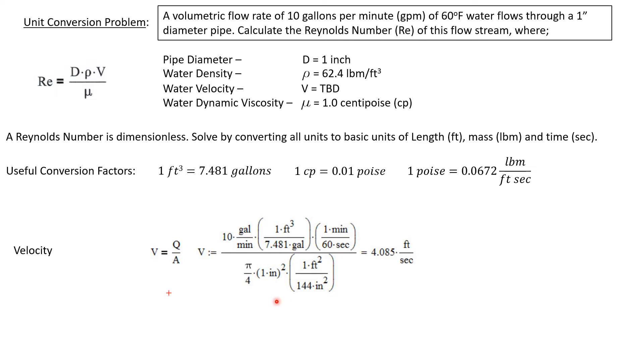The area of the pipe is pi over 4 D squared. Well we have a diameter of one inch, so squaring that we get one square inch. So we have to convert square inches to square feet and there's 144 square inches in a square foot. This is going to give us a velocity of 4.085 feet per second.